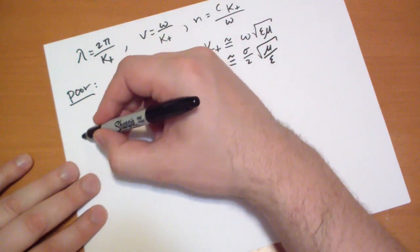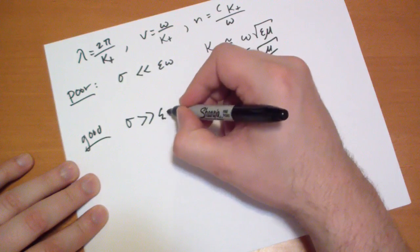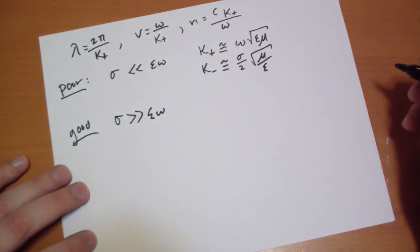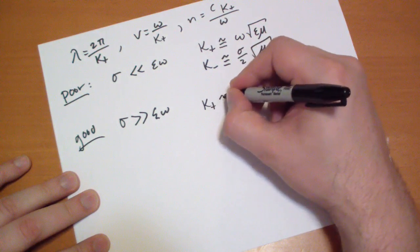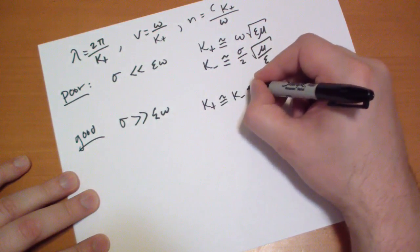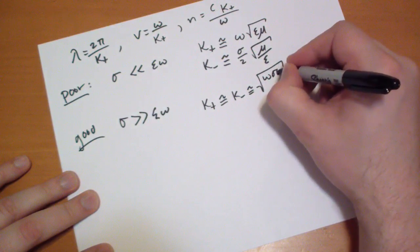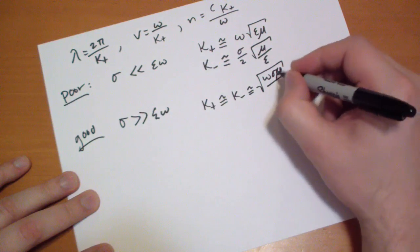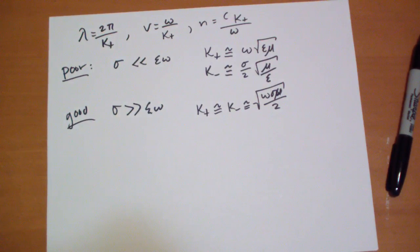For a good conductor sigma is much greater than epsilon omega omega for that we have kappa plus is almost equal to kappa minus which is almost equal to omega sigma mu over 2 okay. The skin depth of course is dependent on the inverse of kappa minus.